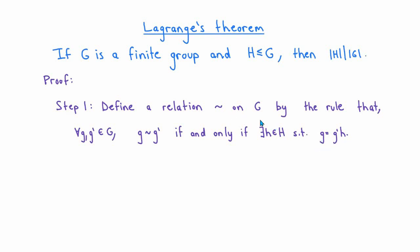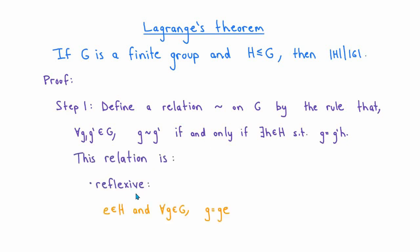We claim that this relation is actually an equivalence relation on G. Remembering what we need to check from the video about equivalence relations, we need to verify three things. First, we check reflexivity. Since H is a subgroup of G, any subgroup must contain the identity element. So for any g in G, g equals g times the identity element, and since the identity is in H, every element of G is related to itself. Therefore this relation is reflexive.